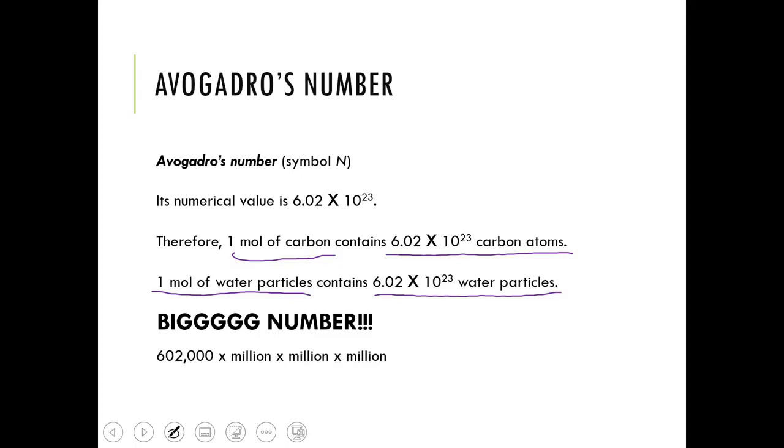It would be like taking 602,000 times a million, times a million again, and times another million. If we wrote it out, look how big this number is. Thank goodness we have scientific notation. So we can write it as 6.02 times 10 to the 23rd.